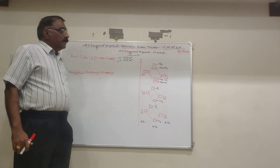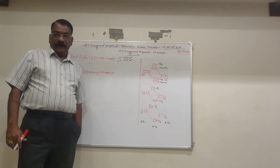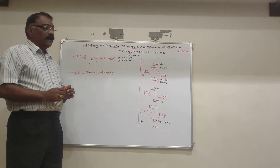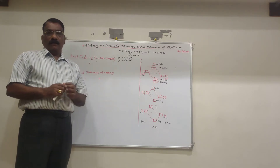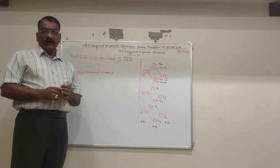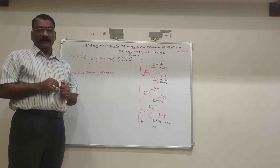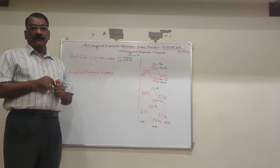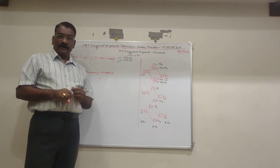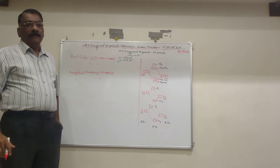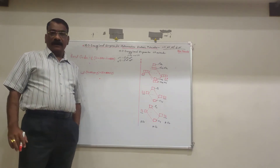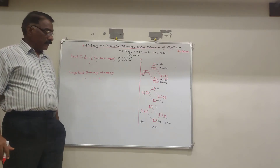In heteronuclear diatomic molecules, there is a difference in the electronegativity of the two atoms. For example, in CO, carbon has high electropositivity, while oxygen has low electropositivity but high electronegativity. Oxygen is more electronegative than carbon, and this will reflect in the energy of their orbitals. When atomic orbitals of atoms with different electronegativity combine, there is a difference in their energy levels.